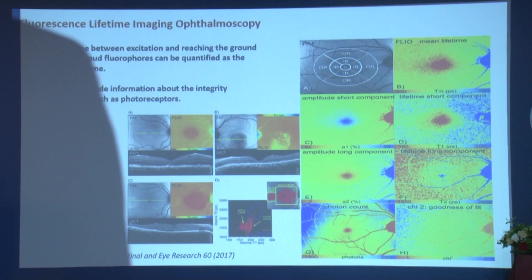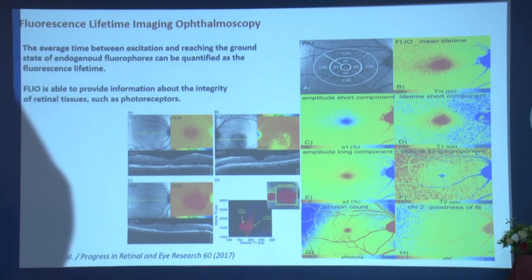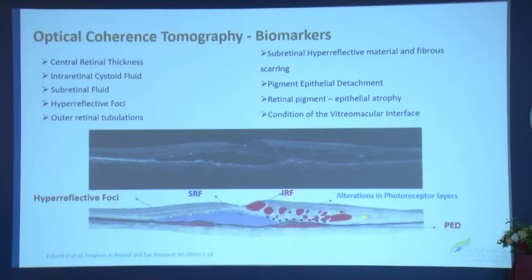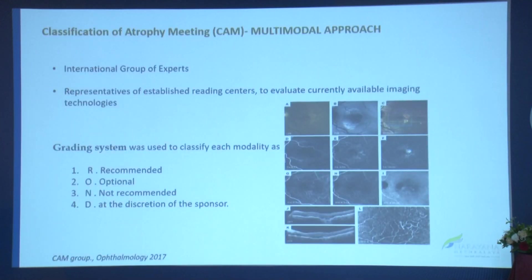MMI in cuticular and in pseudodrusen — something called fluorescence lifetime ophthalmoscopy — wherein you can see whether the FAF signal coming from the retina and RPE is old or new. Old is depicted in blue whereas new is depicted in red. The OCT biomarkers and a CAM multimodal approach has been adopted as well.